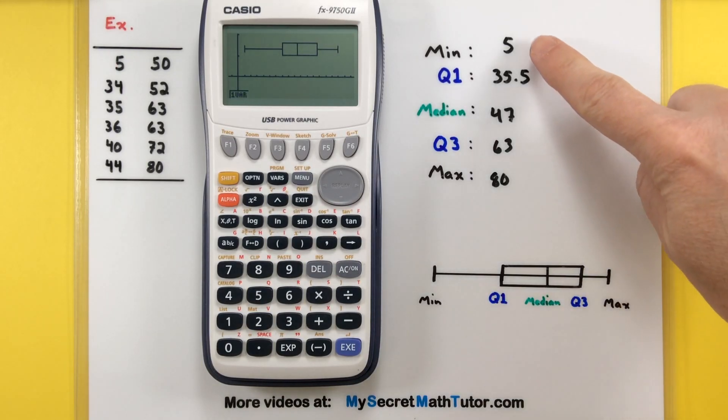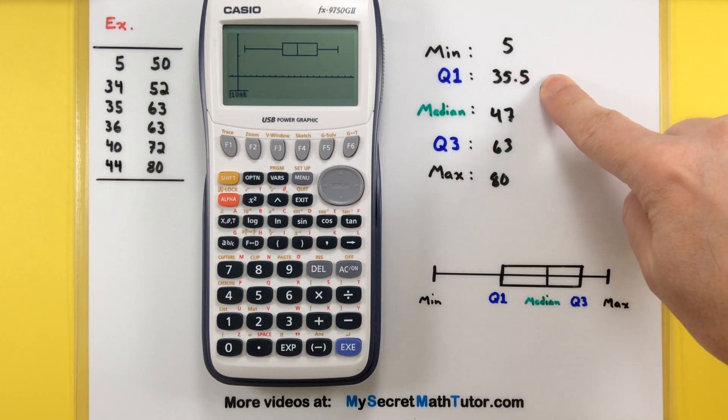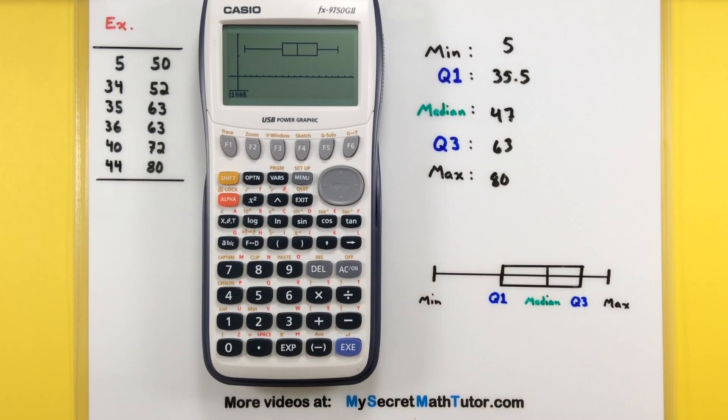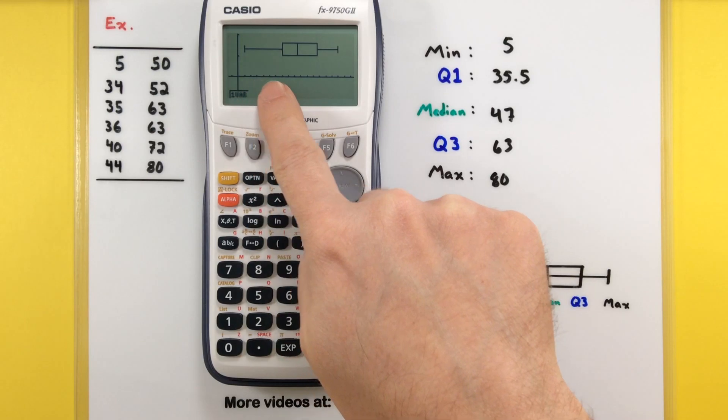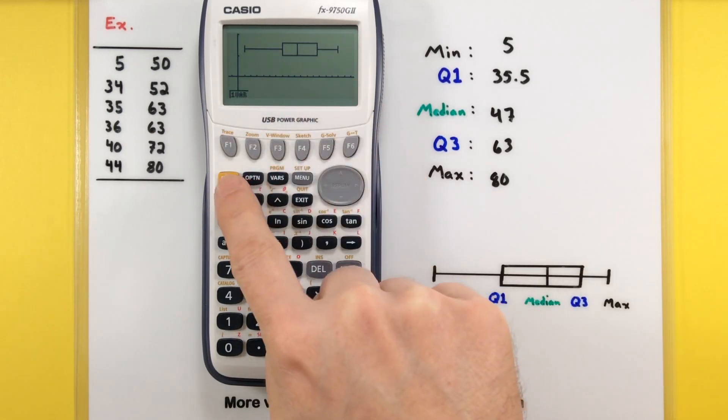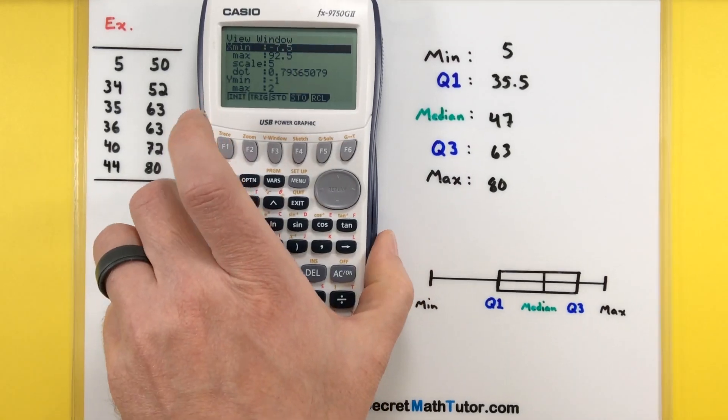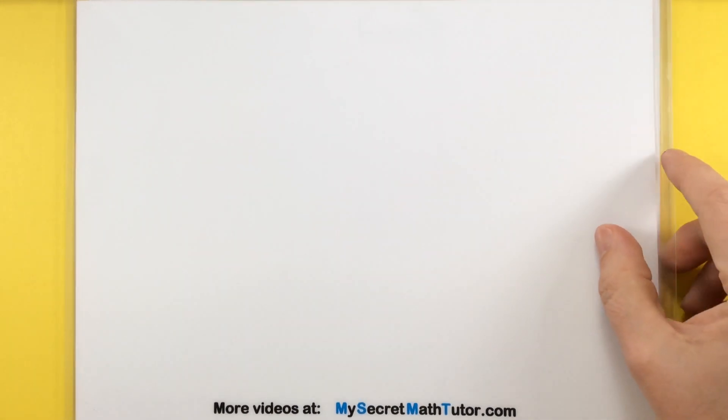And there we have our box plot with our minimum value, our first quartile, our median, our third quartile, and our maximum. If your window is a little tough to see or you're not getting those x values along the bottom, remember, you can just adjust that by going into your window. I like to set my y minimum for a negative 1, a y maximum around 2. And this one I've set the scale for 5. That way I can easily see where those tick marks are. Alright, hopefully that was helpful. If you'd like to see some more of my videos, please visit MySecretMathTutor.com.